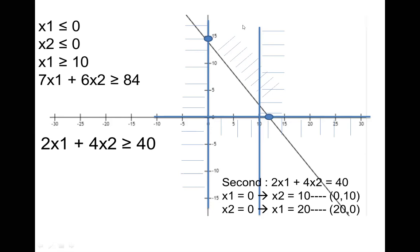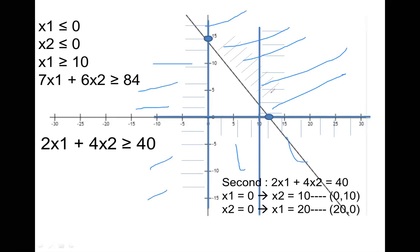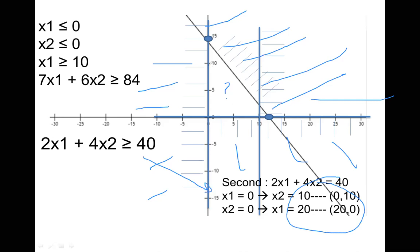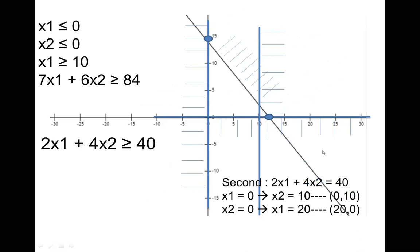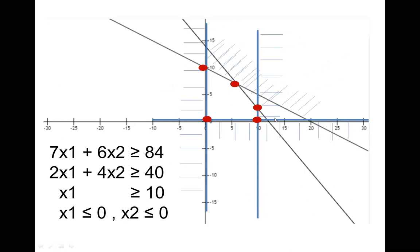We highlight against the sign for 7x1 plus 6x2 less than or equal to 84, shading the area above the line. For the second constraint 2x1 plus 4x2 less than or equal to 40, the two points are (0, 10) on the y-axis and (20, 0) on the x-axis. We draw a straight line crossing these two points. Now we have the graph including all constraints plotted.